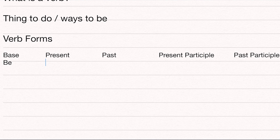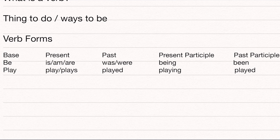Let's look at another irregular verb — a slightly more regular one than 'be.' How about 'drink'? Present: 'drink' or 'drinks.' Past: 'drank.' Present participle: 'drinking.' Past participle is 'drunk' — that's right, that's where that word comes from. The past participle of 'drink' is 'drunk.'